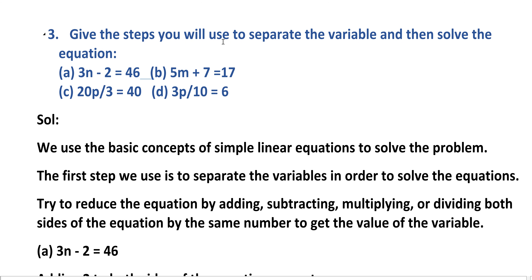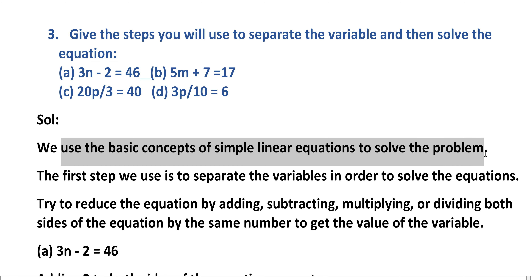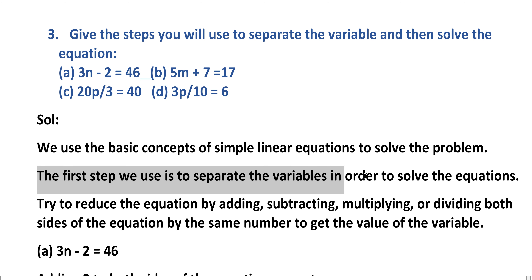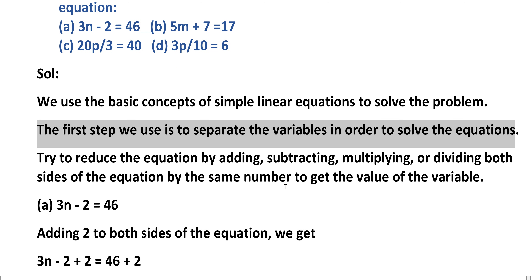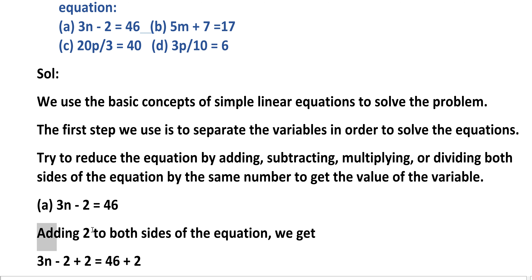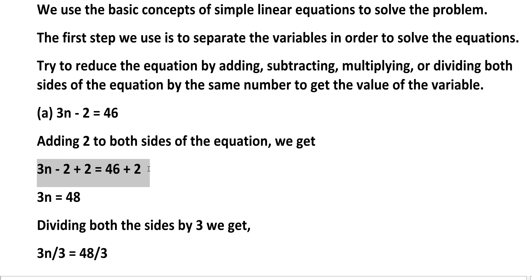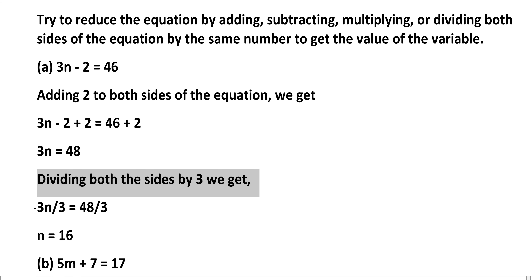Third problem: Give the steps to separate the variable and solve the equation. Solution: We use the basic concept of simple linear equations to solve the problem. The first step is to separate the variable in order to solve the equation, by reducing it through adding, subtracting, multiplying, or dividing both sides of the equation by the same number. A: 3N minus 2 equals 46. Adding 2 to both sides: 3N minus 2 plus 2 equals 46 plus 2, so 3N equals 48. Divide both sides by 3: 3N by 3 equals 48 by 3, so N equals 16.